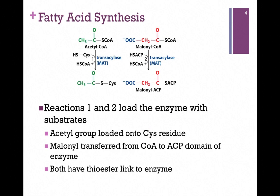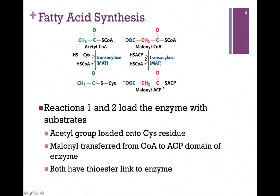In our first step of fatty acid synthesis, we're simply going to load the substrates onto the enzyme. Our substrates are malonyl-CoA and acetyl-CoA in the first round. That acetyl group is going to be transferred from coenzyme A to a cysteine side chain on the enzyme, and the malonyl group is going to be transferred from malonyl-CoA to the acyl carrier protein. In each case, we simply exchange thioester bonds — we broke the thioester bond on acetyl-CoA and reformed it on that cysteine side chain, and broke the malonyl-CoA thioester bond and reformed it on acyl carrier protein. So there's no net change of energy here.